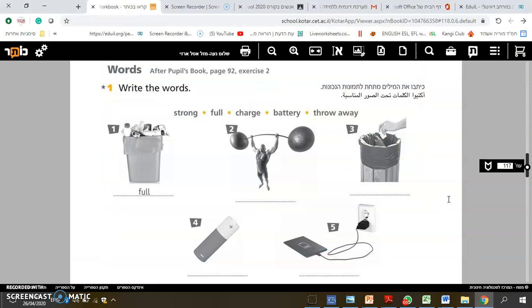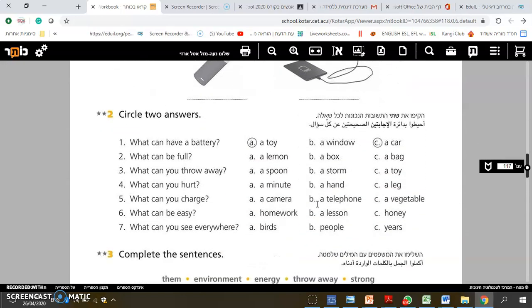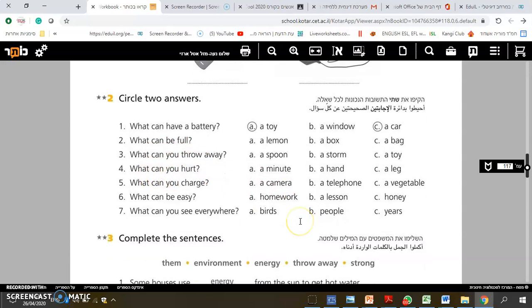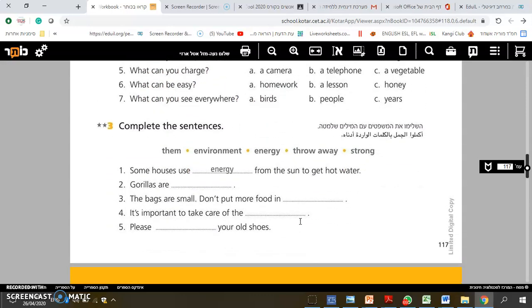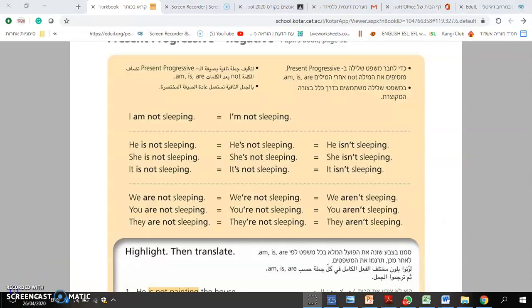Here you will complete several tasks. Write the words under the correct pictures. What is the meaning of the word strong, full, charge, battery, pay, throw away? Circle the two correct answers for each question. What can you have a battery? For example, a toy car. A window cannot have a battery. What can be full? What can you throw away? Complete sentences. Some houses use energy from the sun to get hot water.